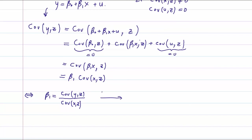Then I'm going to take the sample analog or sample counterpart. So we'll call it beta one hat sum of y minus y bar times z minus z bar over sum of x minus x bar times z minus z bar. And here I can also add a one over n, one over n.